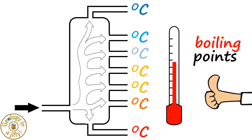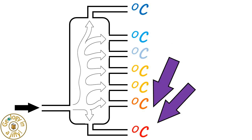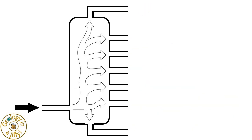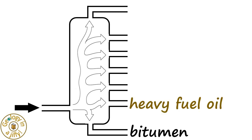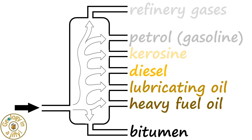So if we know the boiling points of the hydrocarbons, we can separate off the different fractions which are, starting at the base with a higher boiling point: bitumen, heavy fuel oil, lubricating oil, diesel, kerosene, petrol known as gasoline, and refinery gases.